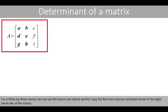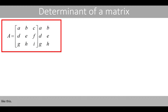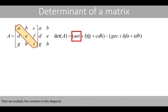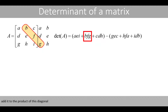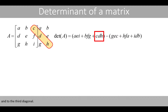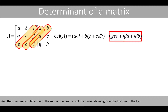For a 3 by 3 matrix we can use the Sarrus rule, where we first copy the first two columns and place those to the right-hand side of the matrix, like this. Then we multiply the numbers in this diagonal, add it to the product of this diagonal and to the third diagonal. And then we simply subtract with the sum of the products of the diagonals going from the bottom to the top.